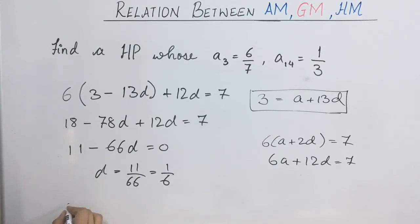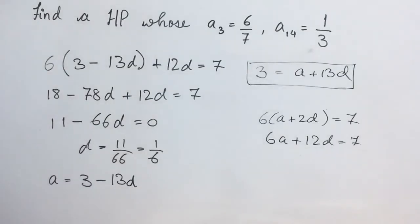Now we will find the value for A. This is equal to A is 3 minus 13D. And D value is 1 by 6. This value will be 18 minus 13, that is 5 upon 6. So we got the value for D as well as A.